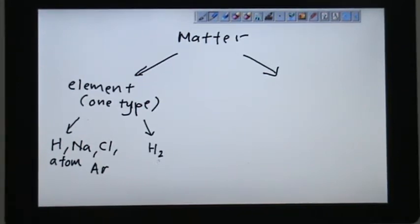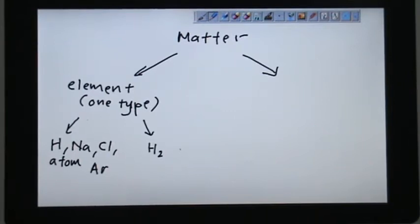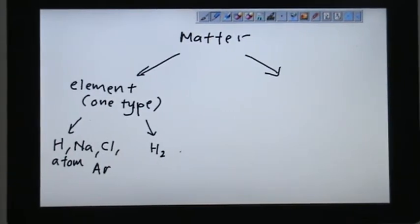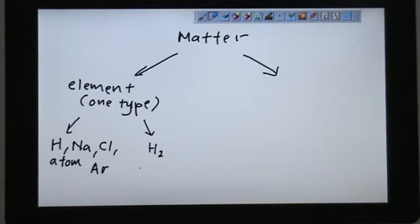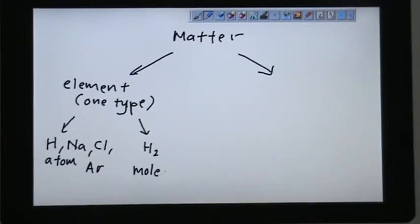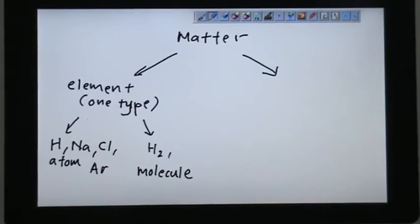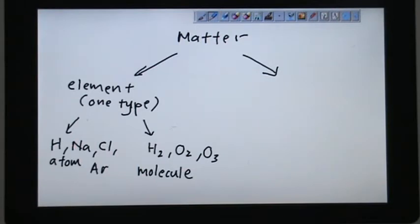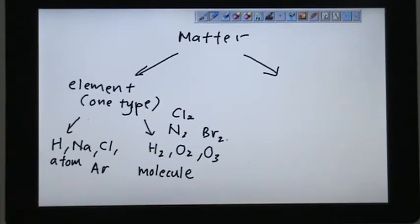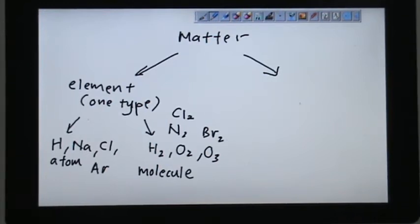It can also be combined with themselves. For example, hydrogen gas consists of two hydrogen chemically bonded together. This is what we call molecule of the same element. More examples would be oxygen gas, ozone, nitrogen gas, chlorine gas, and bromine gas. So the keyword in element is they consist of one type.